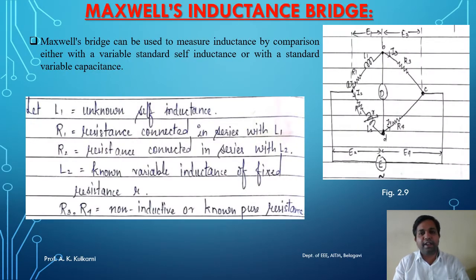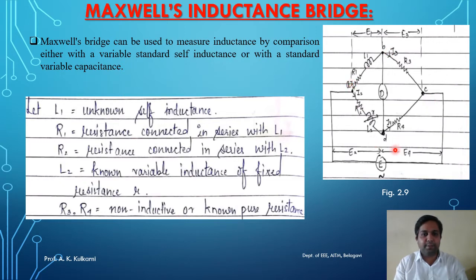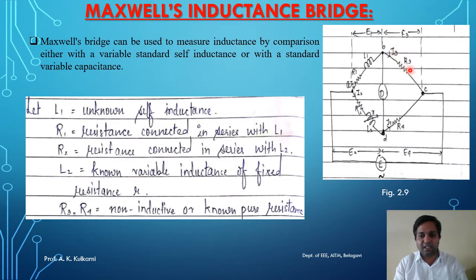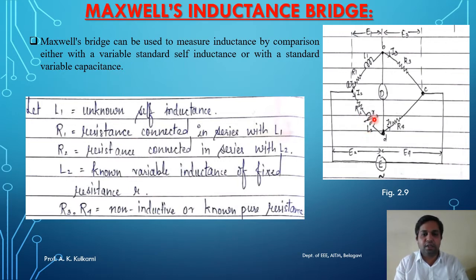The first method of measurement of inductance is Maxwell's Inductance Bridge. This is the given circuit diagram for Maxwell's Inductance Bridge. It is an AC bridge, so we are going to give an AC supply to this entire bridge circuit. It consists of arm AB, arm BC, arm CD, and arm AD. Arm AB consists of impedance having resistance R1 and L1. Arm CB consists of resistance R3. Arm CD consists of resistance R4. Arm AD consists of resistance R2 in series with inductance L2 having an internal resistance of small r.